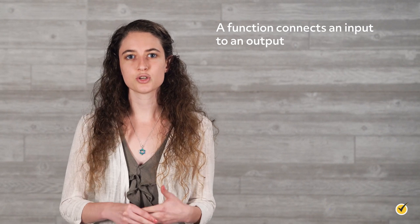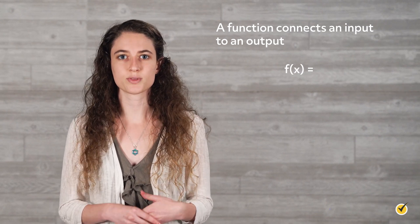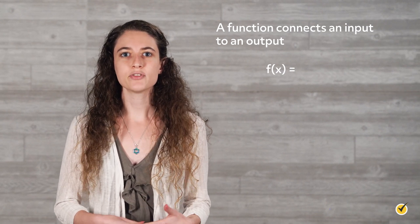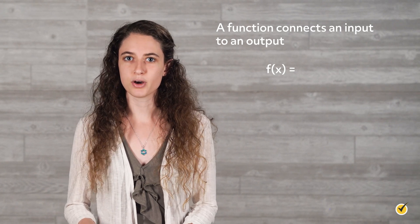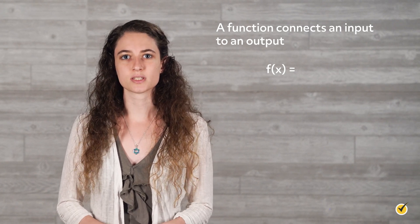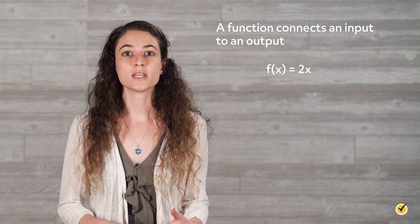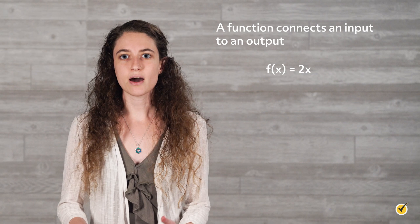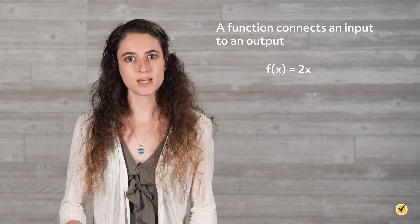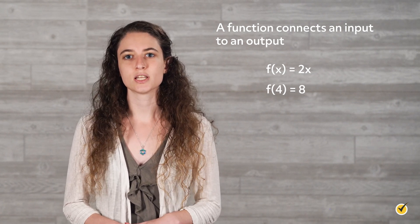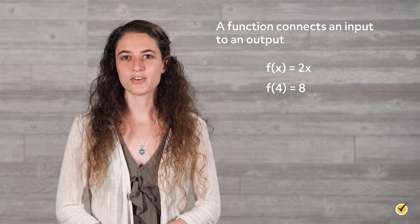Before we get started, let's review a few things. A function connects an input to an output. Its equation starts with f equals, where f is the function name, x is the input, and the expression after the equal sign is the output. An example of this is f equals 2x. With an input x value of 4, the output would be 2 times 4, which equals 8. We can rewrite the function as f equals 8. The input and output of a function can be graphed on a coordinate plane from an ordered pair written as input comma output, or x comma f(x).